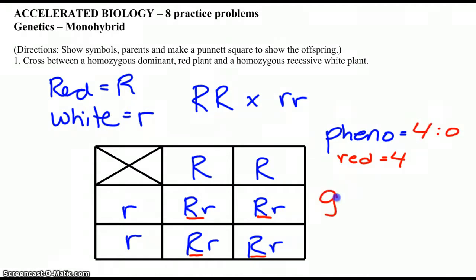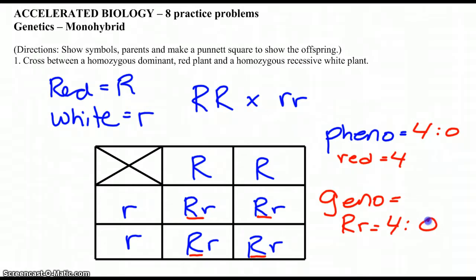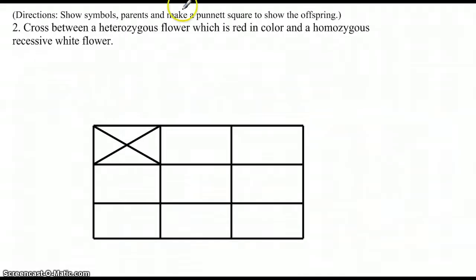Now for genotype — that's the genetic makeup, and we need to look at everything in the box. All four are big R, little r. So in this case, both the phenotypic and genotypic ratios happen to be exactly the same. If you want to practice, try pausing the video, working through the problem, and then checking your work.